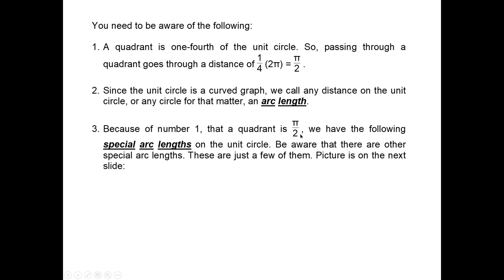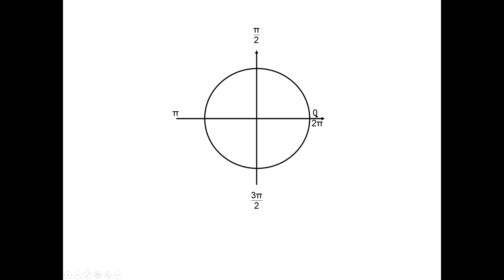A quadrant is π/2, so starting at 0, going one quadrant gives π/2, two quadrants gives 2π/2 which is π, three quadrants gives 3π/2, and four quadrants gives 4π/2 which is 2π. So every quadrant adds π/2: one quadrant is π/2, two is π, three is 3π/2, four is 2π. Continuing: 5π/2, 6π/2 which is 3π, and so on.